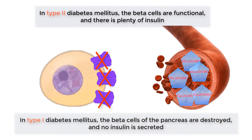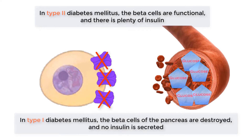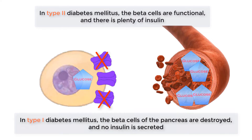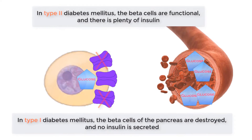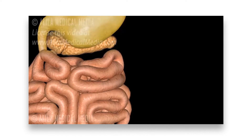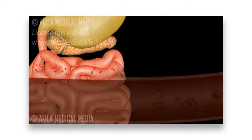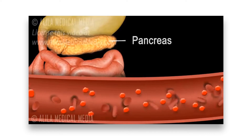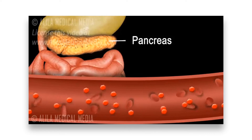In type 2 diabetes mellitus, the beta cells are functional and there is plenty of insulin, but cells become less responsive to the insulin, leading to fewer GLUT4 receptors being available. This also results in hyperglycemia and the severe health problems associated with it. After a meal, glucose is continually entering the blood through the veins of the small intestines, causing blood glucose levels to rise.